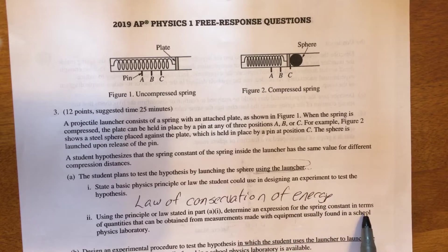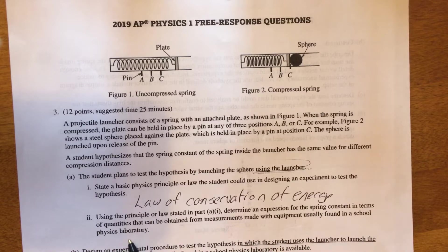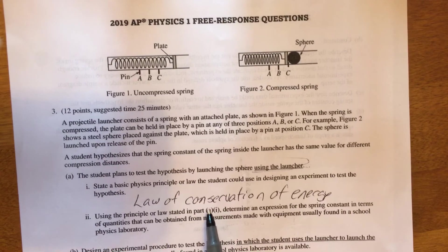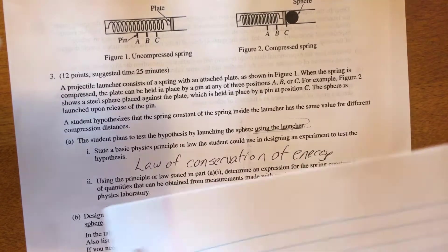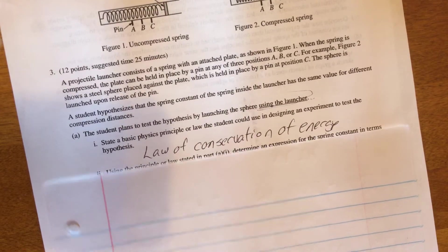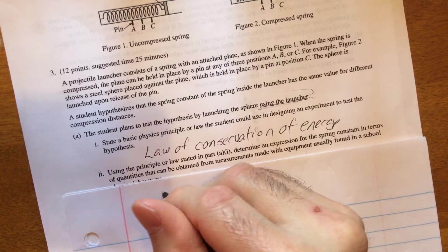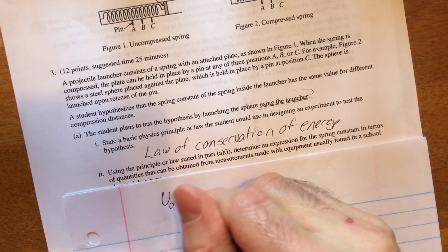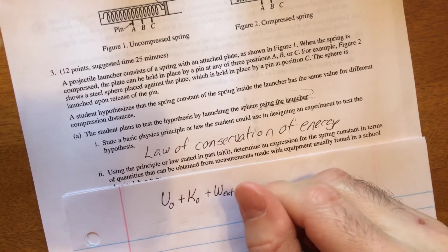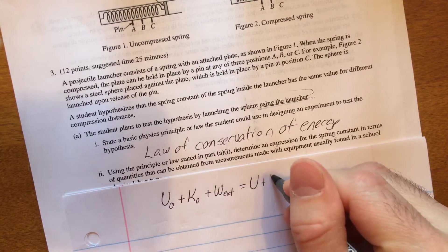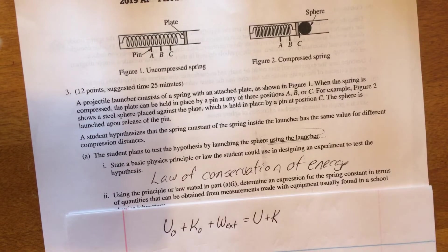Now we want to determine an expression for the spring constant in terms of quantities that can be obtained from the measurements made with equipment usually found in a school physics laboratory. So how am I going to use this to determine an expression for the spring constant? That will take a little bit more explanation. Law of conservation of energy states that the mechanical energy you start with plus any work done by external forces would equal the mechanical energy you end up with.